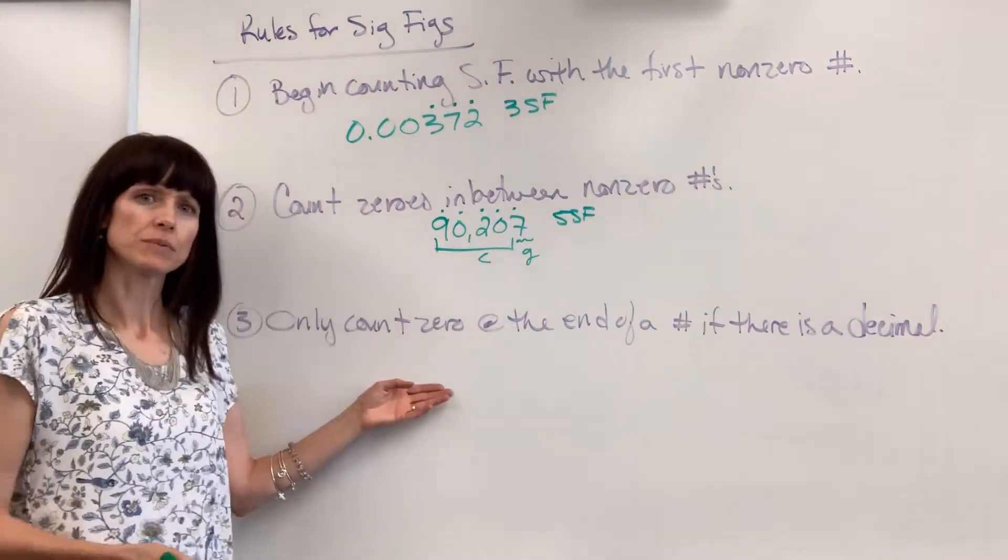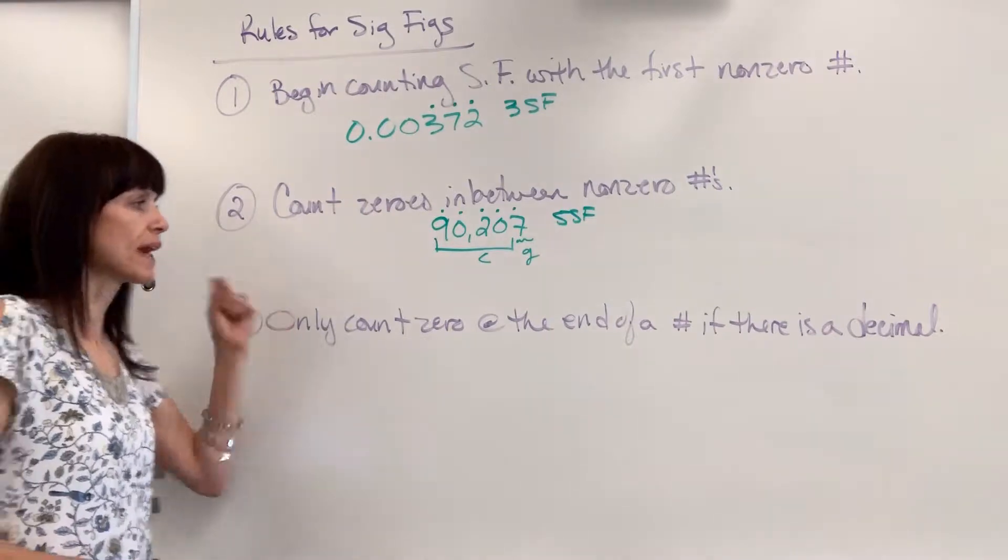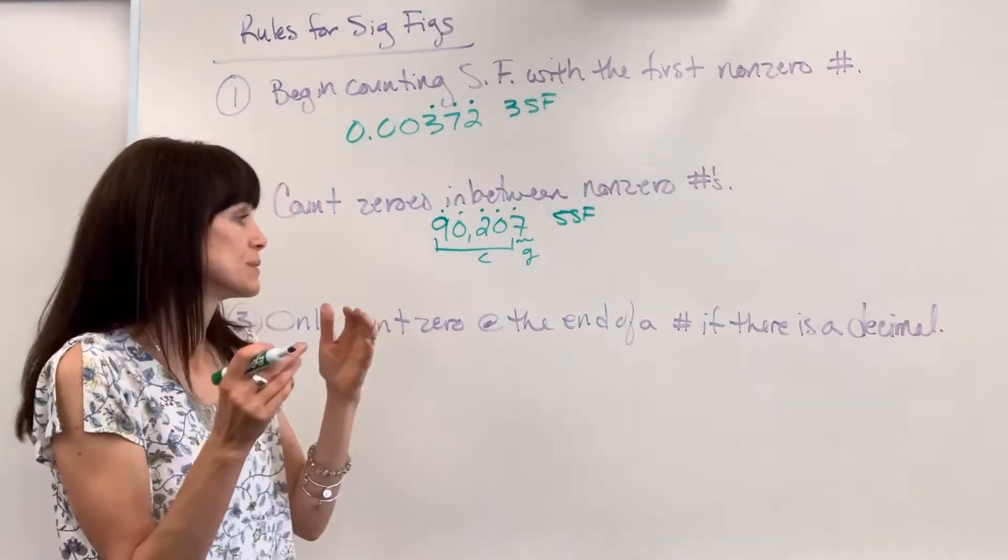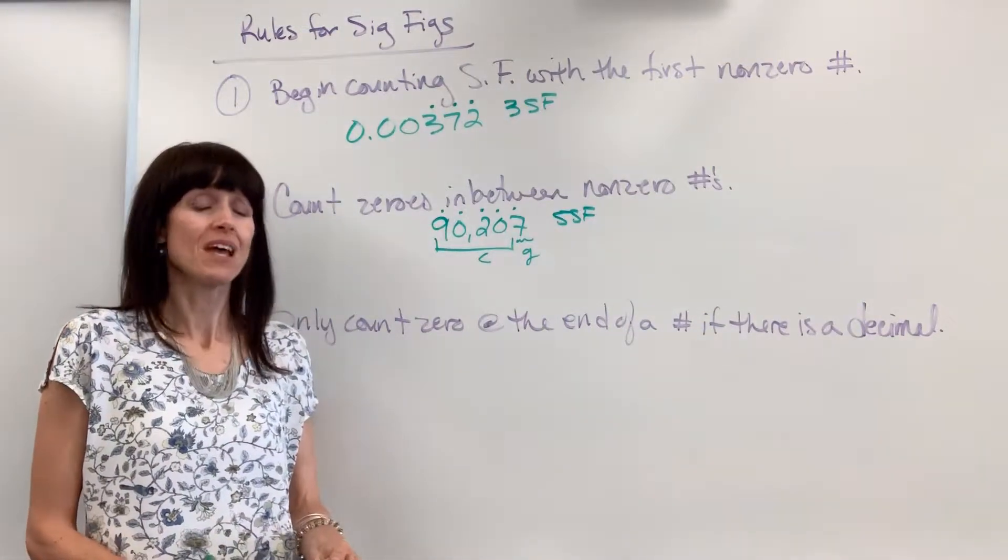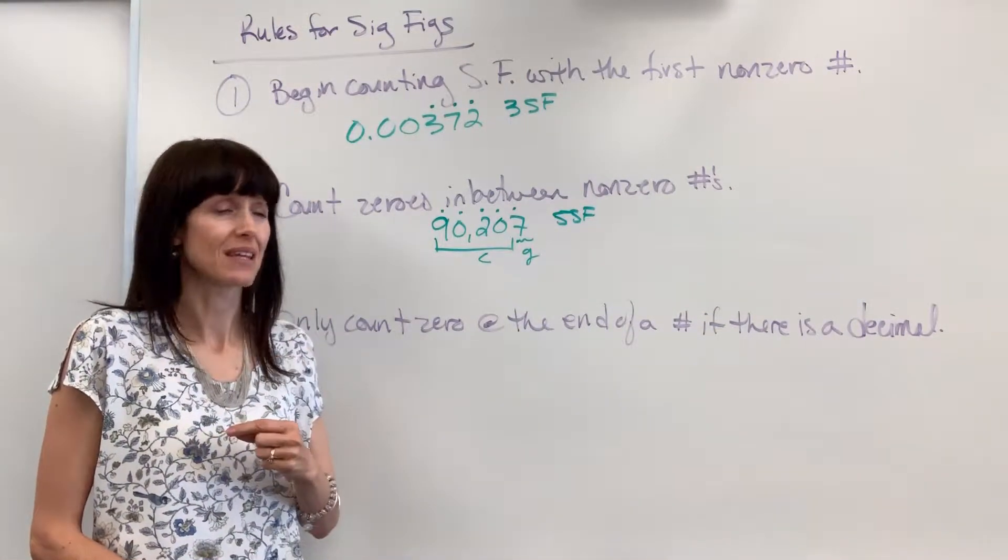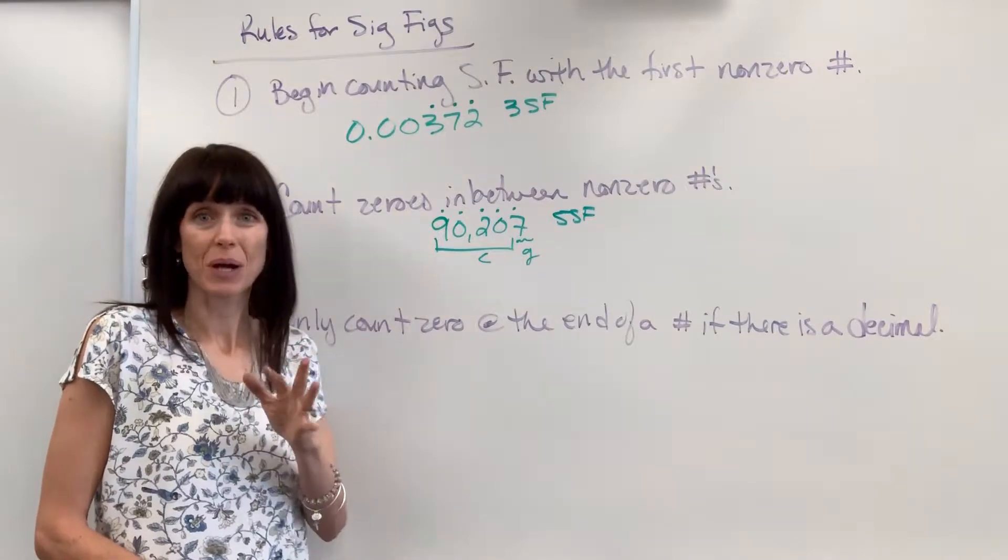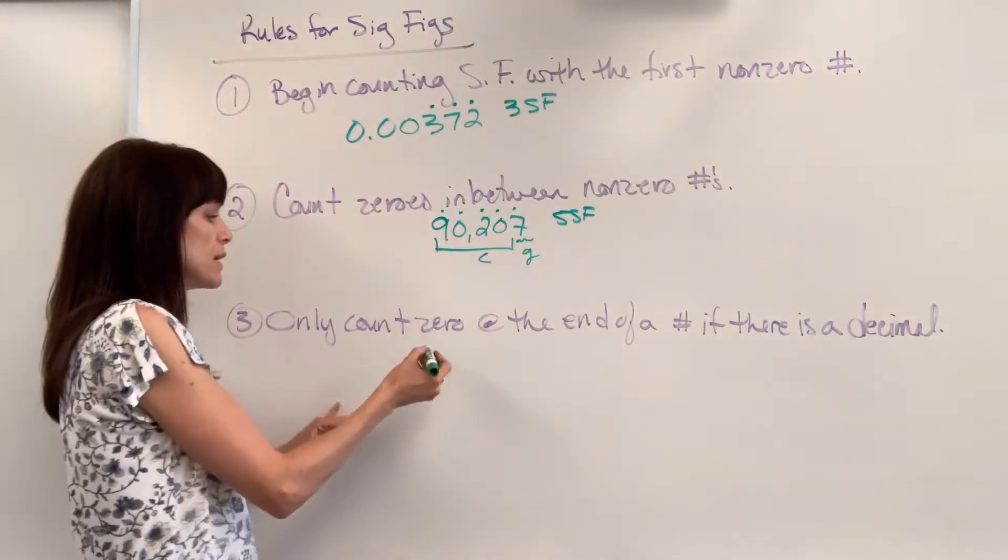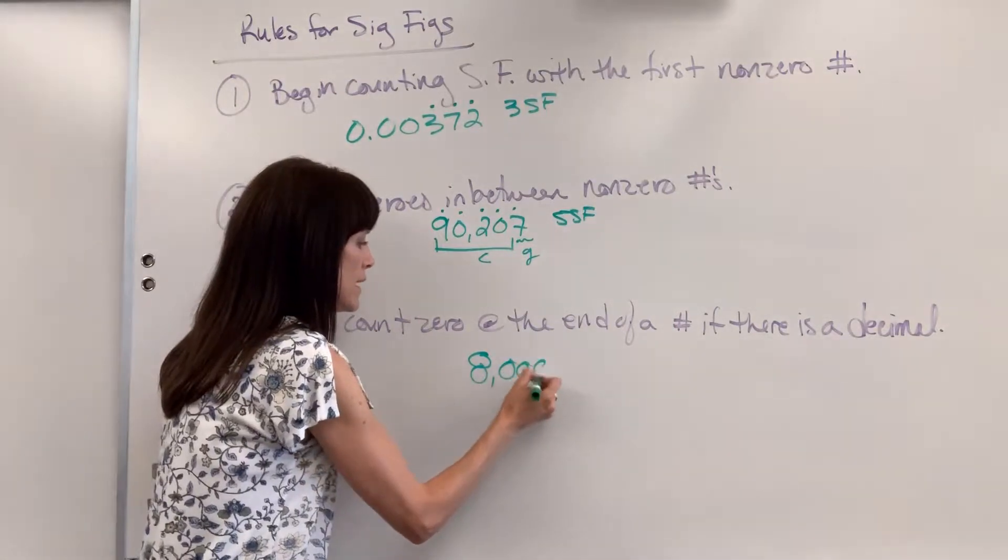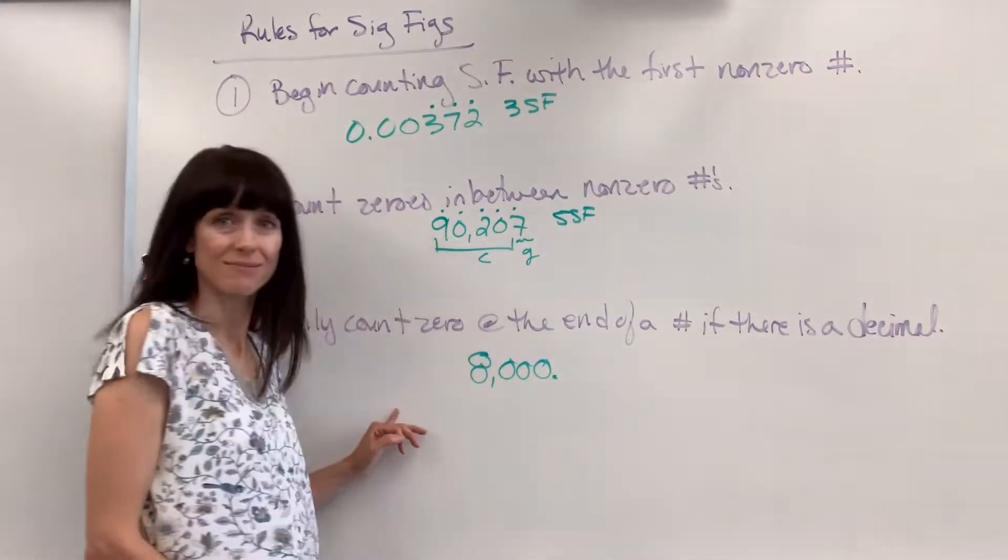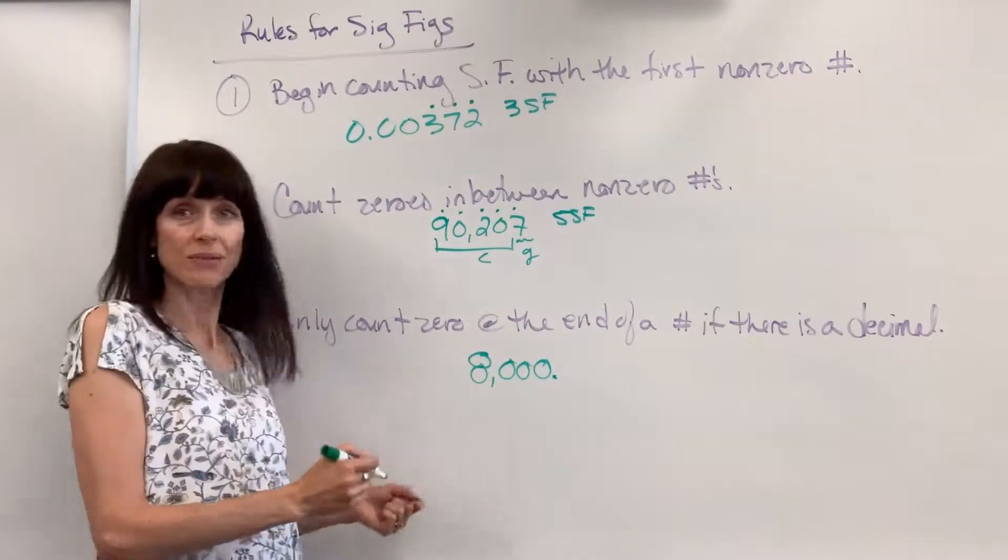This is the one that trips students up. Only count zero at the end of a number if there's a decimal. If there's not a decimal, you can't count the zeros at the end of the number. So let me give you a couple of examples. Let's say that I have 8,000. Notice that decimal right there.